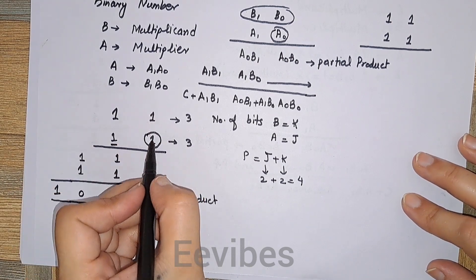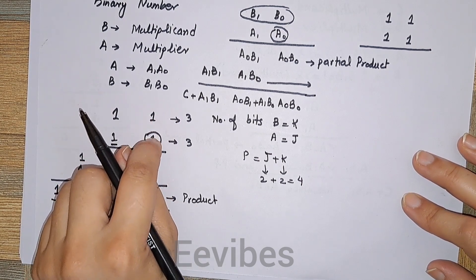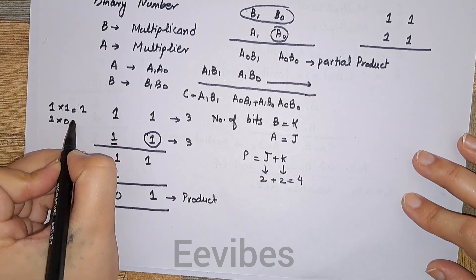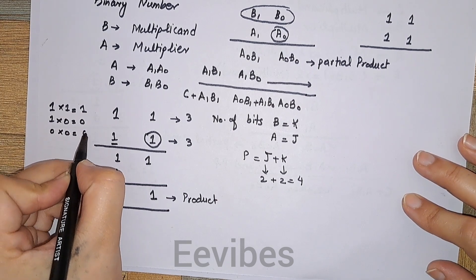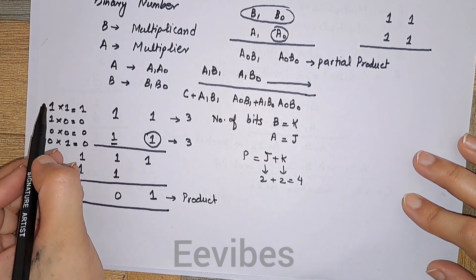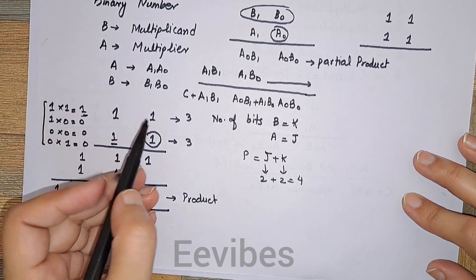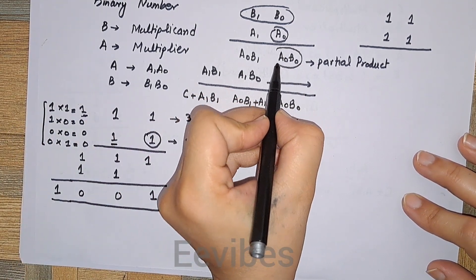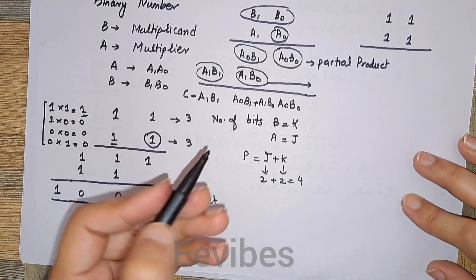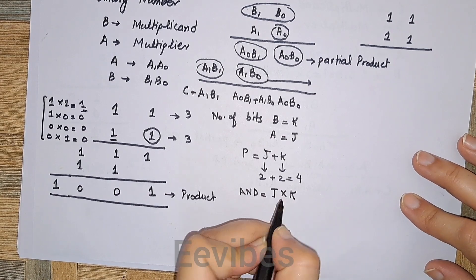When we take one bit of the multiplier and multiply it with one bit of the multiplicand: 1×1 = 1, 1×0 = 0, 0×0 = 0, and 0×1 = 0. This is basically an AND gate operation where we get output one only when both inputs are one. In this case we are getting four products total, which means four AND gates are required. You can also determine the number of AND gates by multiplying j × k.